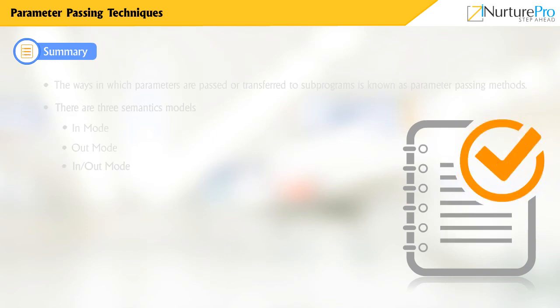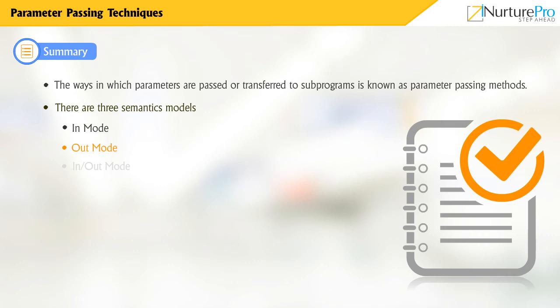Let's have a quick recap on what we discussed. The ways in which parameters are passed or transferred to sub-programs are known as parameter passing methods. There are three semantics models: In-mode, Out-mode, and In-or-out mode. Thank you for watching this video.